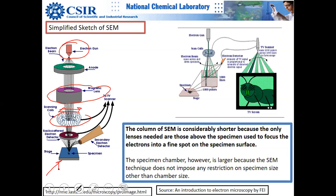When electrons bombard a tiny area on the sample, various types of electrons come out. Electrons from the conduction band and valence band are ejected — these are secondary electrons. Secondary electrons are primarily the electrons coming out of the valence band and conduction band, and since you don't need much energy to remove those electrons, SEM does not require so much beam energy.